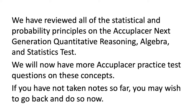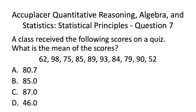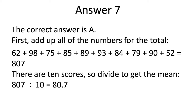Up to this point, we have reviewed all of the statistical and probability principles on the Acuplacer Next Generation Quantitative Reasoning, Algebra, and Statistics Test. We'll now have a look at more practice questions on these concepts. Moving on to Acuplacer QAS Statistics Practice Test Question 7. The correct answer is A. Add up all of the numbers for the total — adding up all the numbers in our set, we get 807. There are 10 scores in the set, so divide to get the mean: 807 divided by 10 equals 80.7.